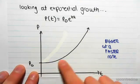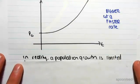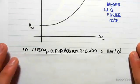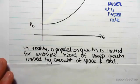Okay, so that's what the exponential curve says, but what happens is that in reality the population growth is obviously often limited. Okay, so for example, let's say we had a herd of sheep. That herd of sheep is limited in its growth by the amount of space and food, for example.